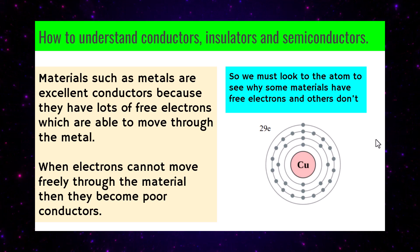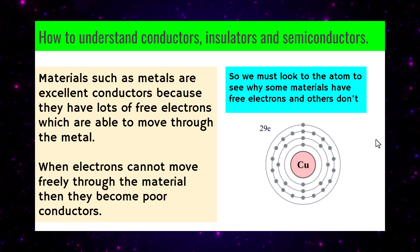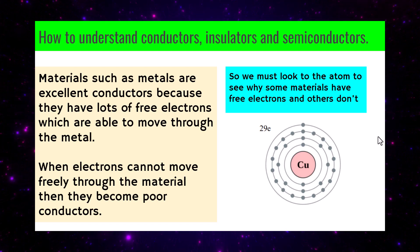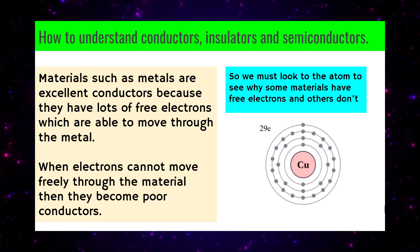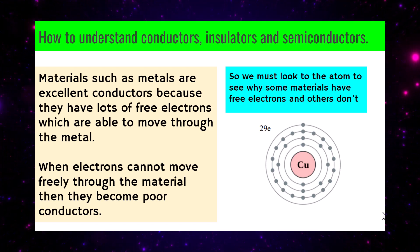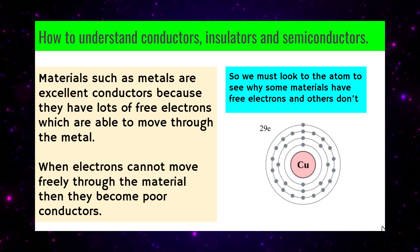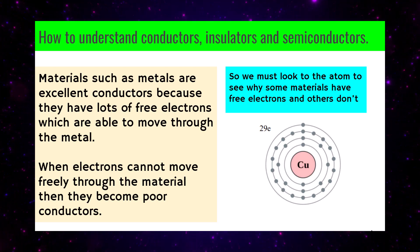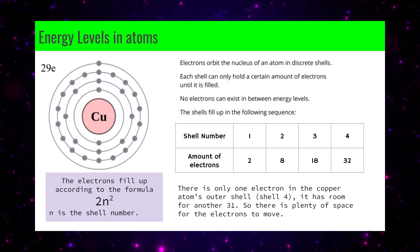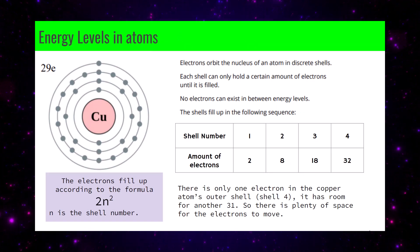We must look to the atom to see why some materials have free electrons and others don't. Copper is made up of 29 electrons, but they're all arranged in a certain way which restricts some while others are free. Let's see why, using the copper atom surrounded by shells.